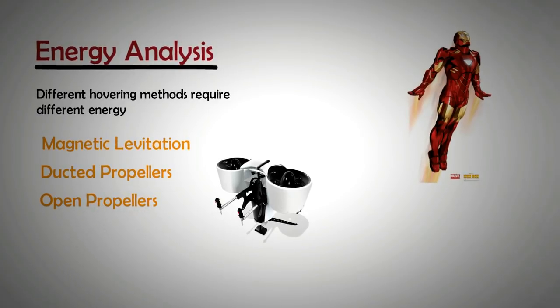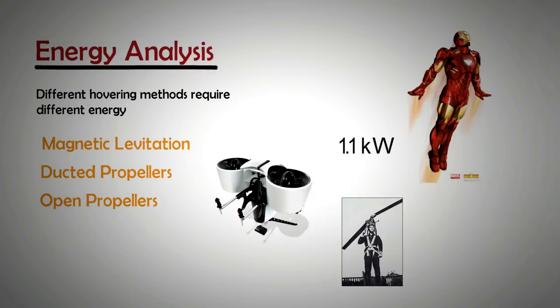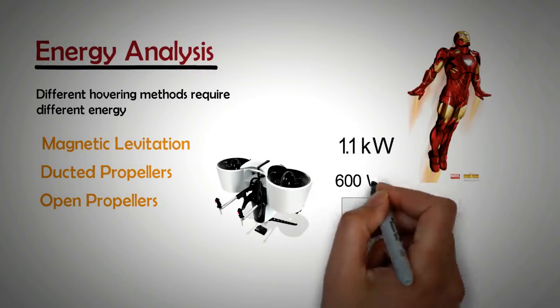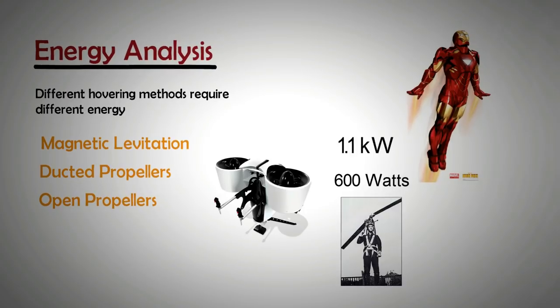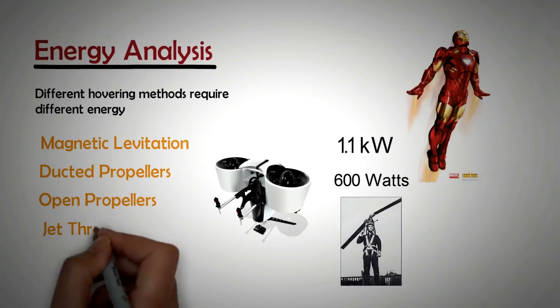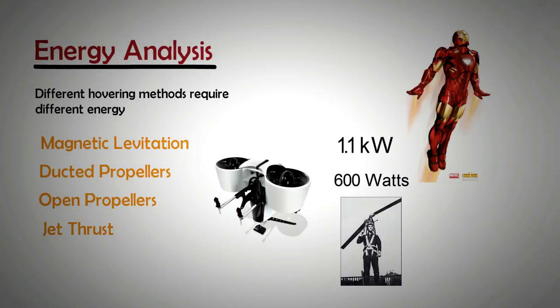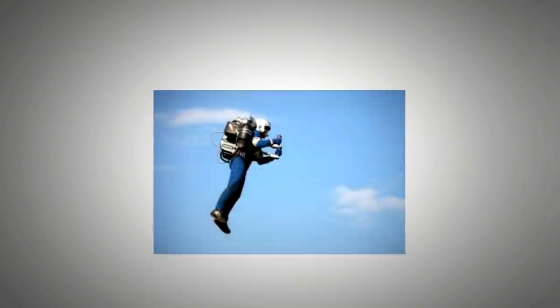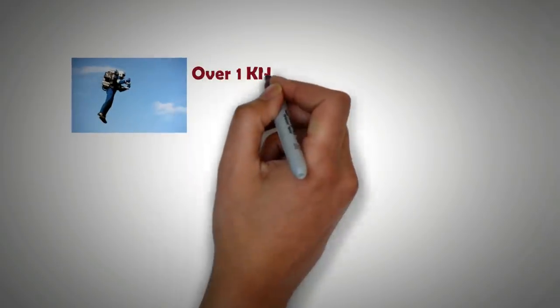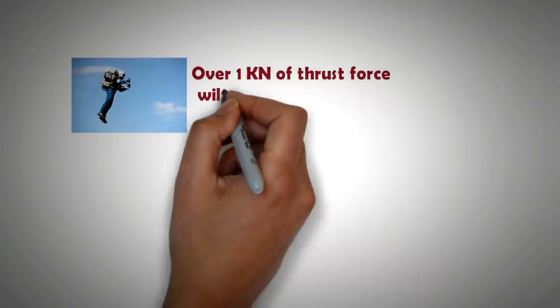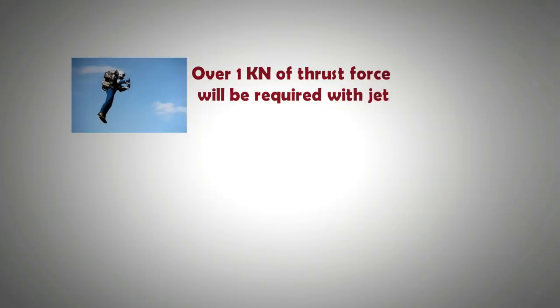The next most energy efficient method for hovering is the use of ducted helicopter blade followed by open helicopter blade. Several human powered helicopters have been made over time that have achieved flight. It has been experimentally recorded that using helicopter blades with a 78 kg person and a 55 kg copter requires only 1.1 kilowatt to climb and just 600 watts to maintain altitude. Hovering through jet thrust is one of the least energy efficient methods. If jet thrust is used then over 1 kilonewton of thrust force will be required depending upon the weight of the jetpack and the person.